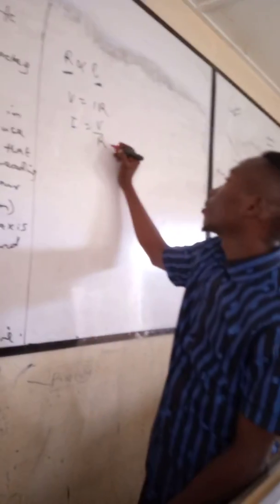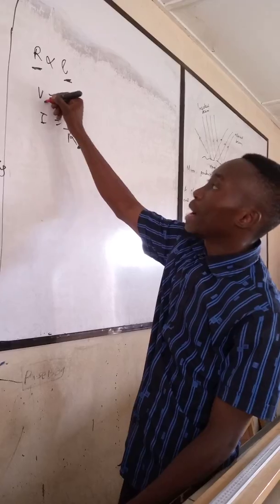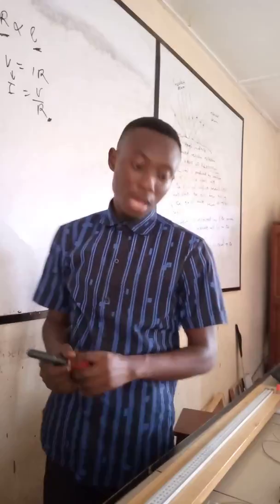My I is equal to V over R. So when the resistance is increasing, my current is reducing. And that is what we are going to see. Because when we are making contact, as the length of the wire is increasing, the current is reducing.